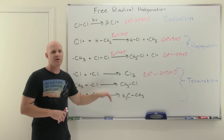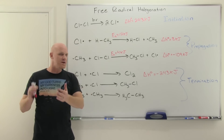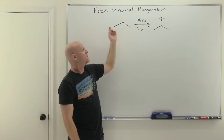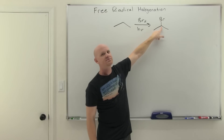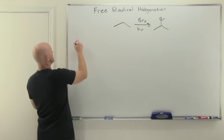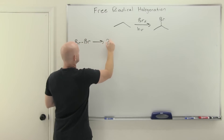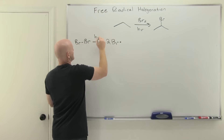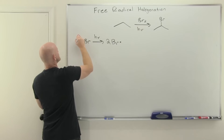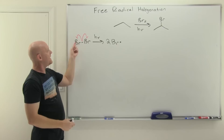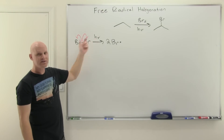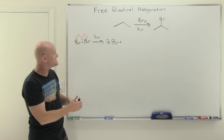Now I want to work out the arrow pushing for the bromination of propane. Bromination being very selective, it primarily happens at the more substituted secondary carbon. We always start with an initiation step: just like with chlorination, we form a couple of bromine radicals. This takes energy - light, heat, or peroxide. For the arrow pushing, we draw homolytic cleavage of the Br-Br bond. We call it homolytic because both sides get the same thing - each gets one electron, forming two bromine radicals. That's your initiation step.